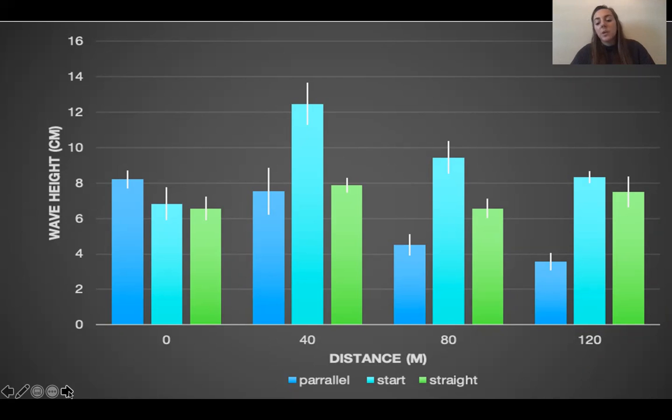At 120 meters, the parallel treatment almost reduced to about the water level or almost completely reduced in some cases. The starting and the straight treatments actually leveled out as the start treatment was planing on top of the water by that point.